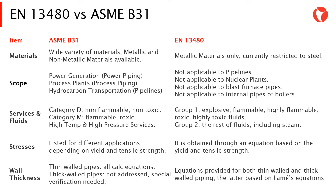The ASME B31 code presents all the equations necessary to obtain the thickness of thin walled pipes. However, this code does not present equations to obtain the thickness of thick walled pipes, and therefore special verifications are needed. The EN 13480 code does present both equations for thin and thick walled piping. Equations for thick walled piping are based on the equations of Lamé.